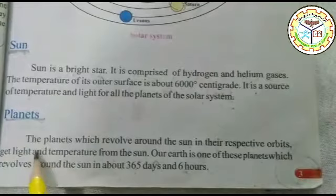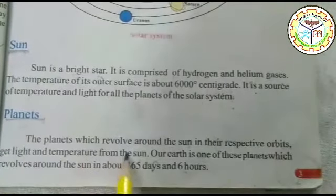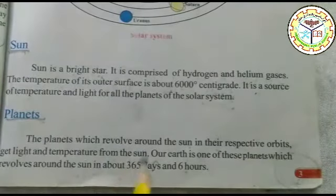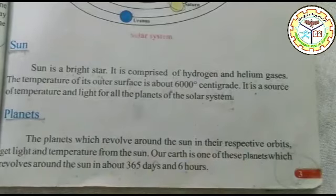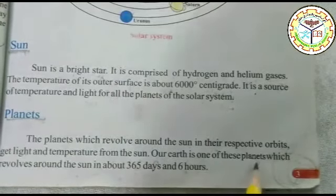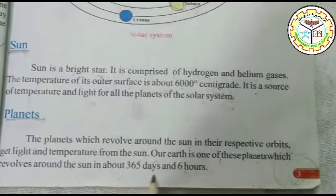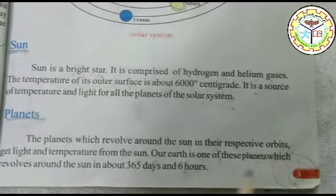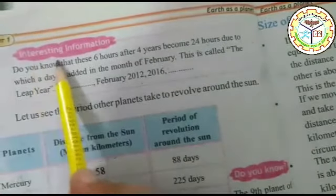Next point: Planets. The planets which revolve around the sun in their respective orbits get light and temperature from the sun — سورج کے گرد اپنے اپنے مدار میں چکر لگانے والے سیارے سورج سے روشنی اور حرارت حاصل کرتے ہیں۔ Our earth is one of these planets — ہماری زمین بھی ان میں سے ایک سیارہ ہے — which revolves around the sun in about 365 days and 6 hours — جو سورج کے گرد ایک چکر 365 دن اور 6 گھنٹوں میں مکمل کرتی ہے۔